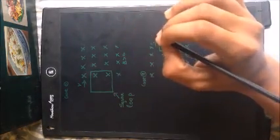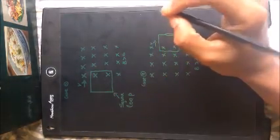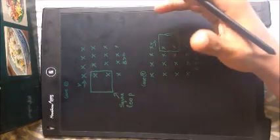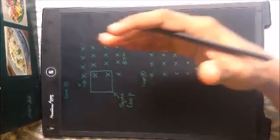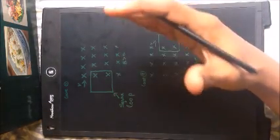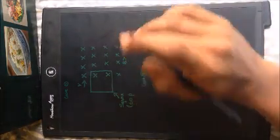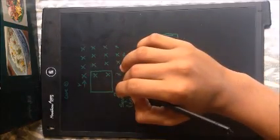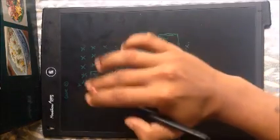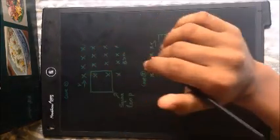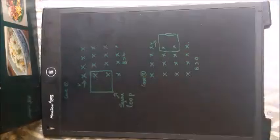According to Lenz's law, the current produced in the coil will always try to oppose the cause producing it. So based on that law, we are going to find the direction of induced current.